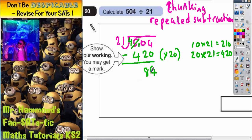Now how many 21's can we take away from 84? Well, we could try 2 21's. 2 21's are 42. So let's try taking away 42.